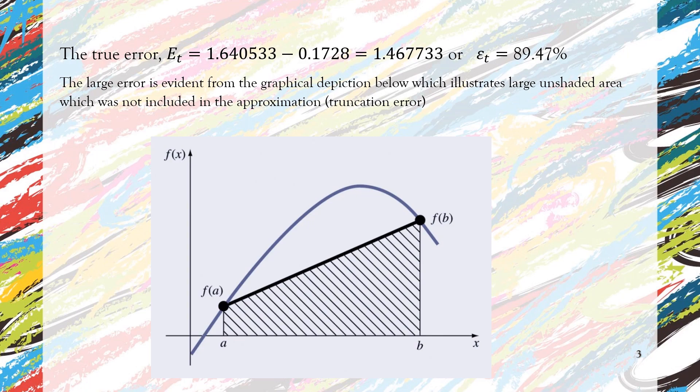That accumulates to the truncation error and contributes to the large percentage true error of 89.47%. So, in order to reduce the size of the error, we can proceed with multiple application or we can apply interpolating polynomial with higher degree. Thank you, that's all for today.